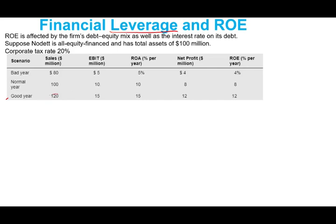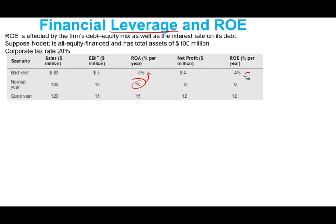In a good year, sales are 120 million, EBIT is 15 million, return on asset is 15%, net profit is 12 million, and return on equity is 12%. Notice that a relatively small change in sales — approximately 20% — affects the ratios much more, doubling them down: going from 10 to 5, and 8 to 4.